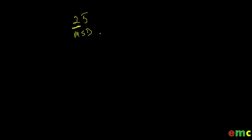let us do a quick reminder of our knowledge of significant figures. For example, if we have 25, the digit with the higher significance is 2, which is our most significant digit. If we have 75, the digit with higher significance is 7. If we have 150, the digit with the highest significance is 1, which is our most significant digit.